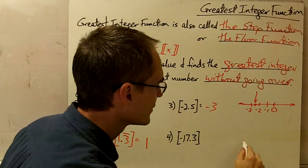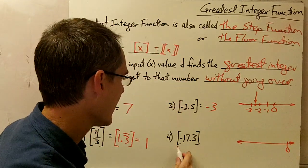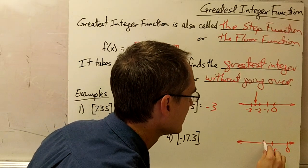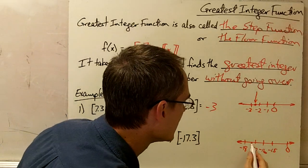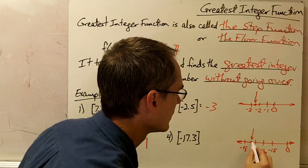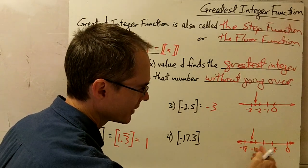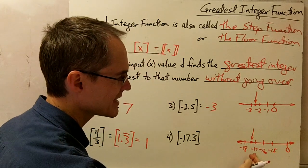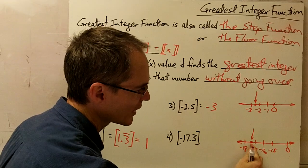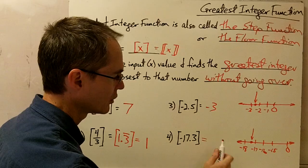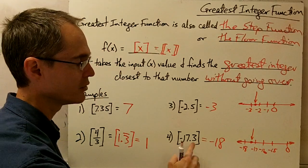Example number 4 — I'll use a number line again. Let's say we have 0, negative 15, negative 16, negative 17, negative 18, and negative 17.3 would be about right here. I want the integer closest to this number without going over. On the number line, 'over' means to the right. Negative 17 is tempting, but negative 17 is greater than negative 17.3, so my actual greatest integer without going over is negative 18. Negative 18 is the closest integer to this value without going over.